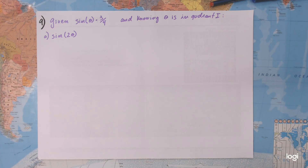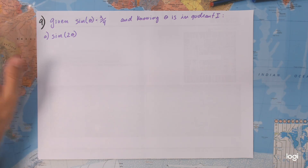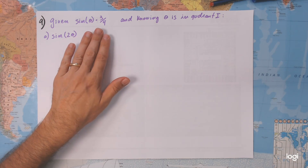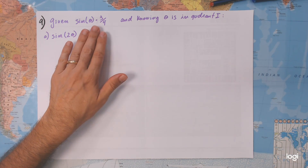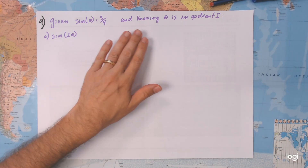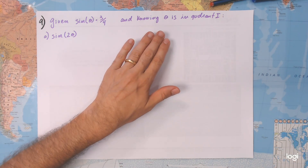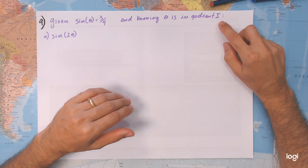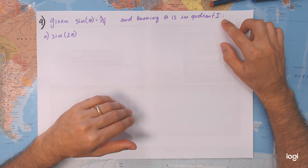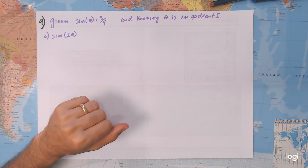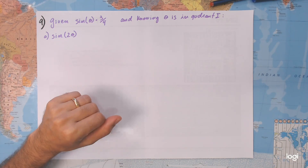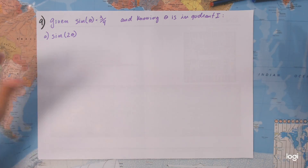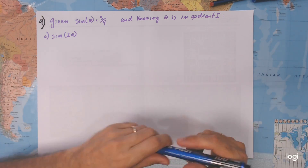For this exercise, number 9, given sine of theta equals 3 fourths, and knowing that theta is in quadrant 1. Why do you have to know this? We have to know this, because remember, let's put this in here.